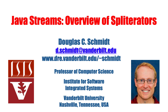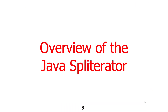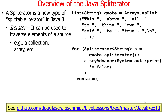Let's talk about spliterators first — you'll see in a second why we start here. The basic idea is to talk about how the source of a stream is converted and used properly. A spliterator is a portmanteau — a combination of two words meaning splittable iterator — and it was introduced in Java 8. A spliterator can be used as both an iterator and a splitter.